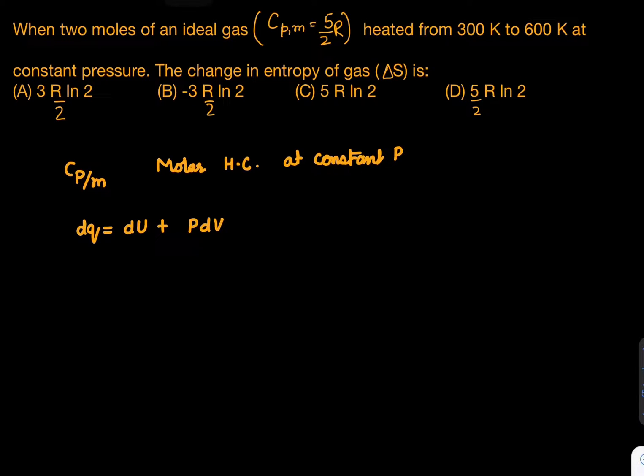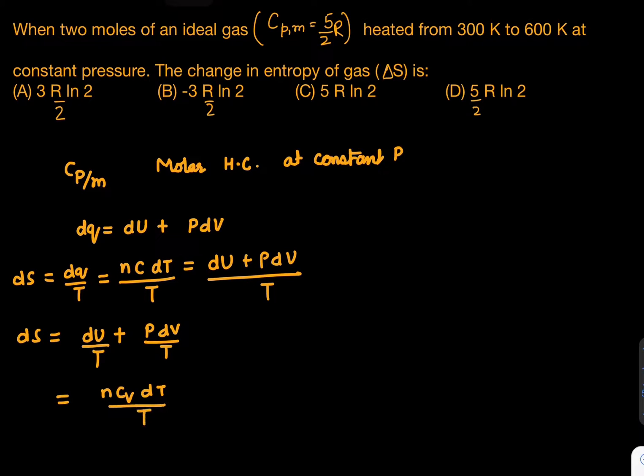We can write dU + PdV. Now divide it by T. So dq/T can be written as dS, right? This is basically dS. So dS = (dU + PdV)/T, which is dU/T + PdV/T. What is dU? We can write nCv dT/T, and this is PdV/T. Once you put all this information properly, we integrate dS.